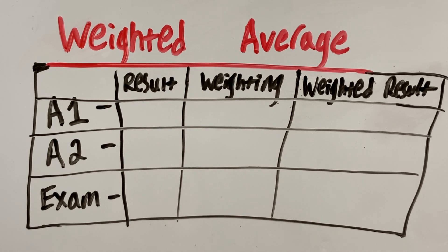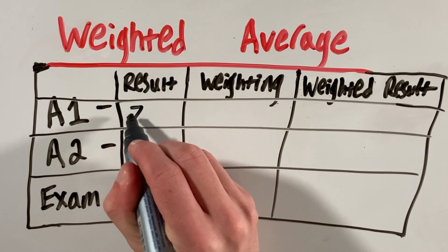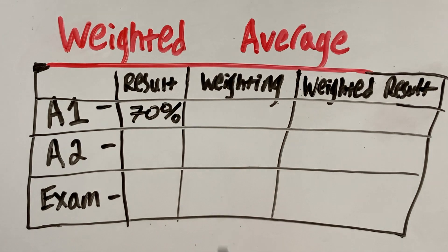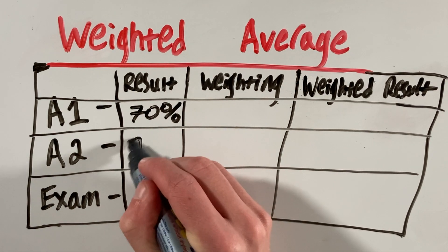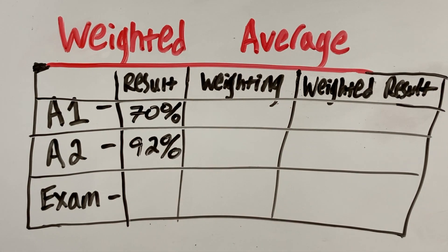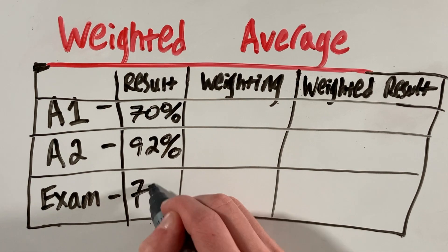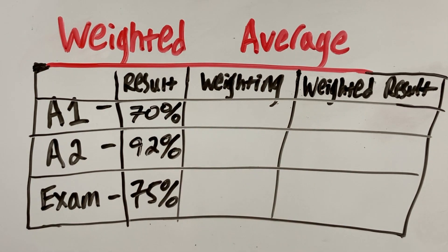In other words, let's say we have assignment 1, assignment 2, and an exam. In those three tests, in the first assignment we got 70%, in the second one we got 92%, and in the exam we got 75%.